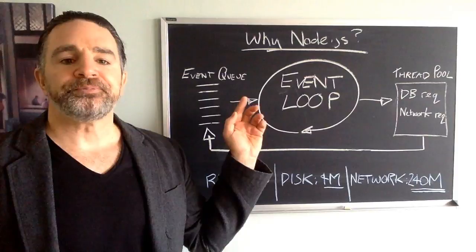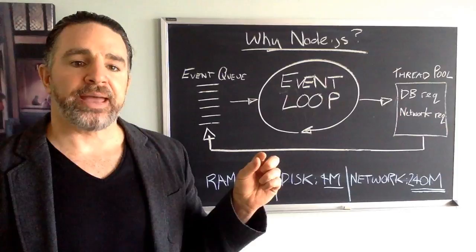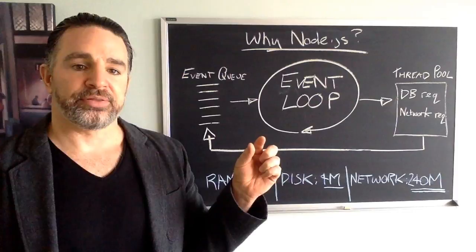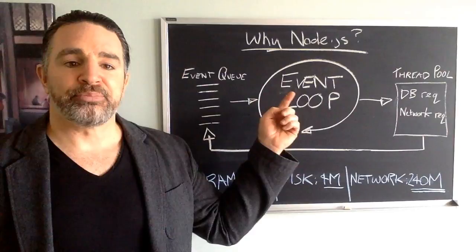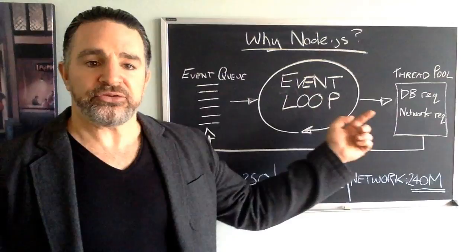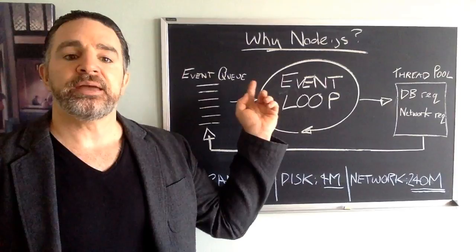Compare that to servers such as Apache. What Apache would do is spawn a separate thread for every request — so for every user connection it gets a separate thread. Back to our analogy, that would mean for every new customer order, a separate server would be allocated, which would then go out to the kitchen, make the food, come back to the customer's table and give them the food, and only then would it be free to serve another customer.